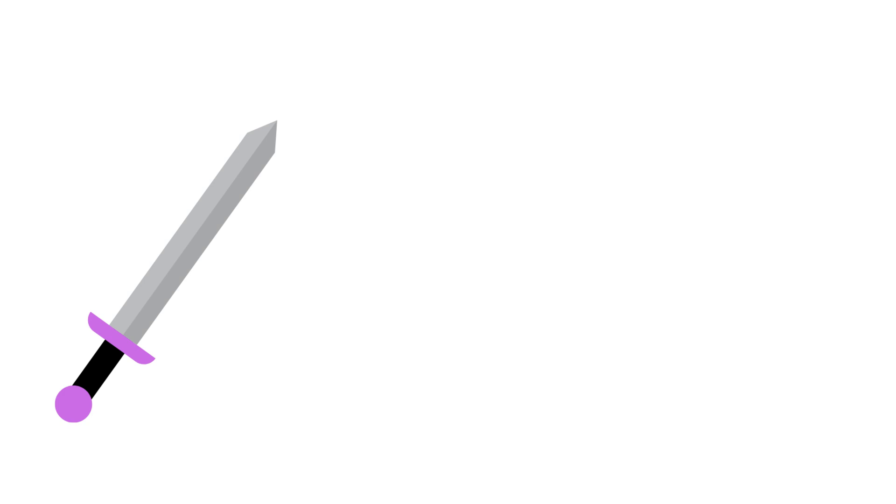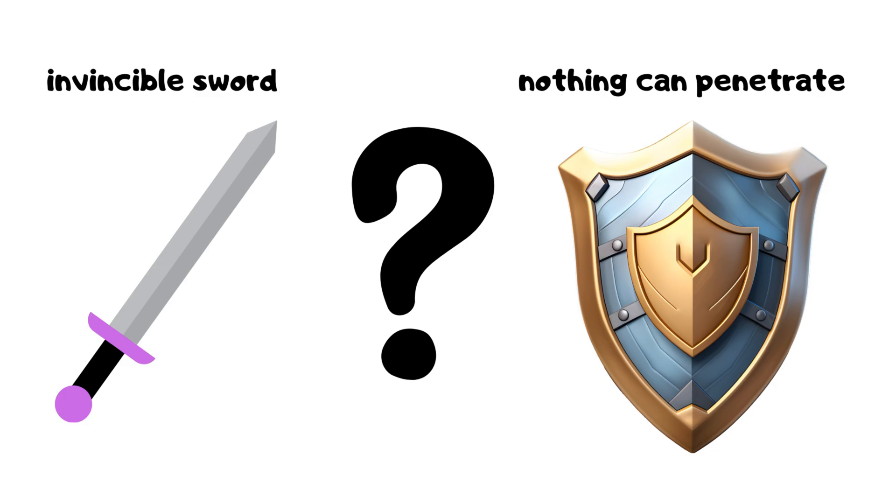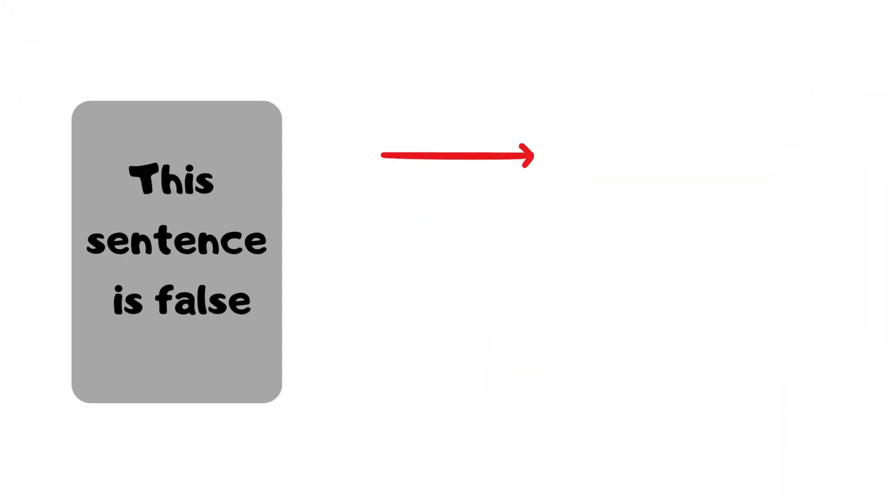Sword and shield paradox. If there is a self-proclaimed invincible sword and a shield that nothing can penetrate, which one wins? Card paradox. A card labeled 'this sentence is false' is false if true and true if false.